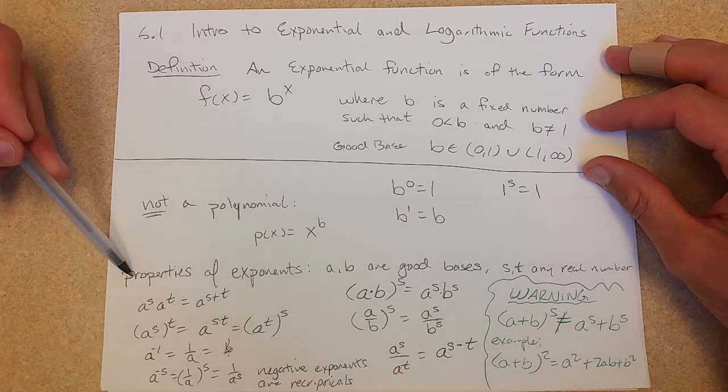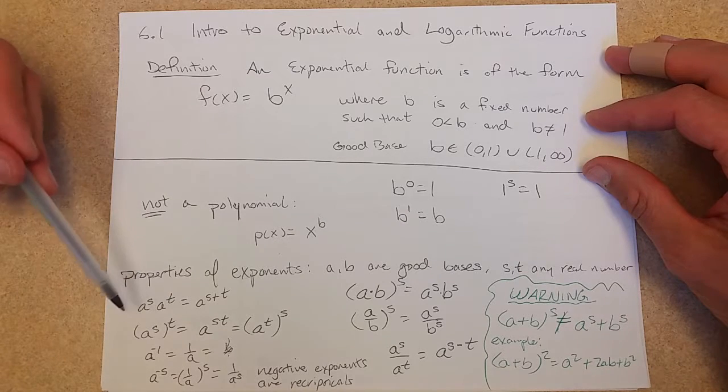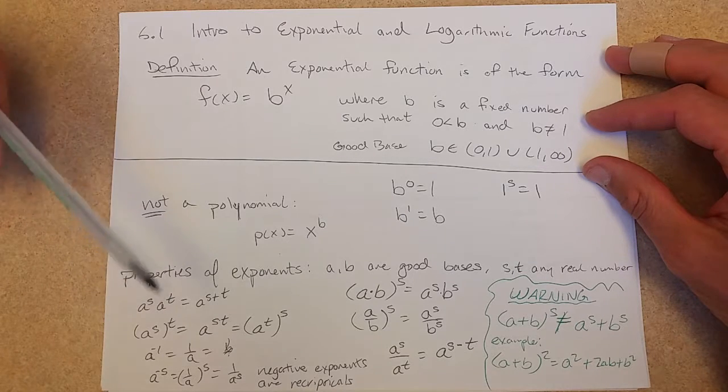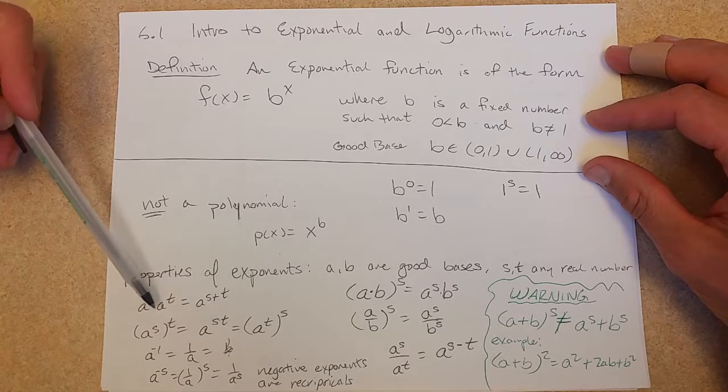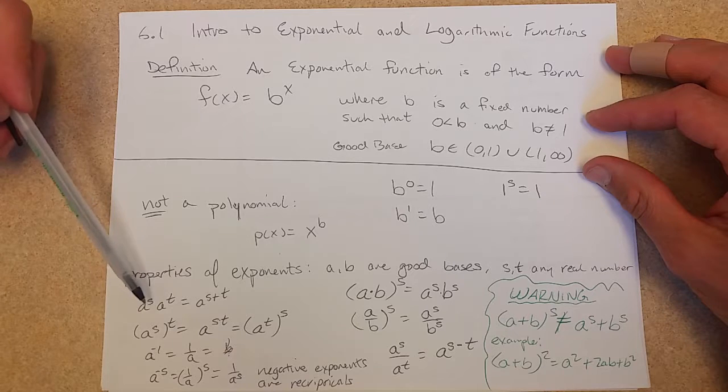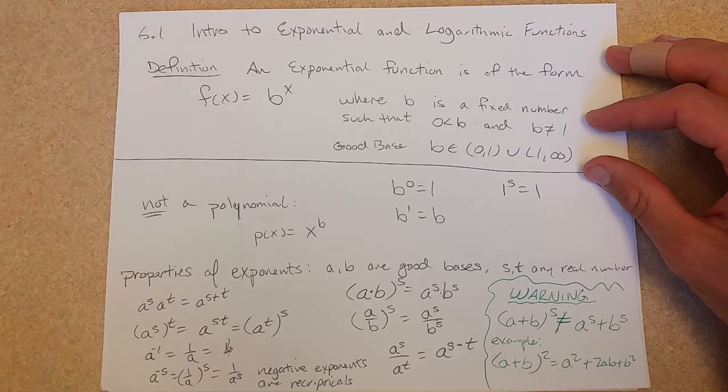Now properties of exponents. These are all algebraic properties. I tried to write them in the order you'd probably be most familiar with. So we have a to the s times a to the t. Same base. You can add their exponents together.